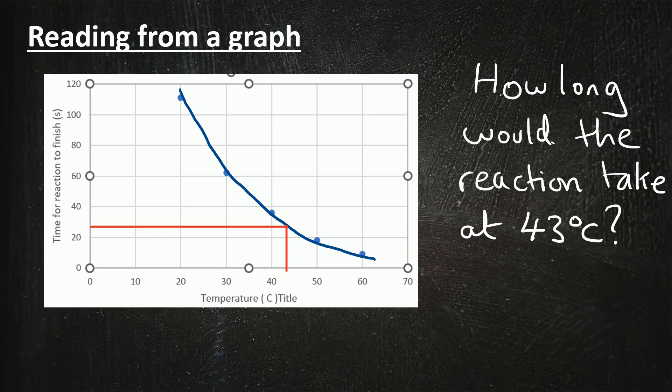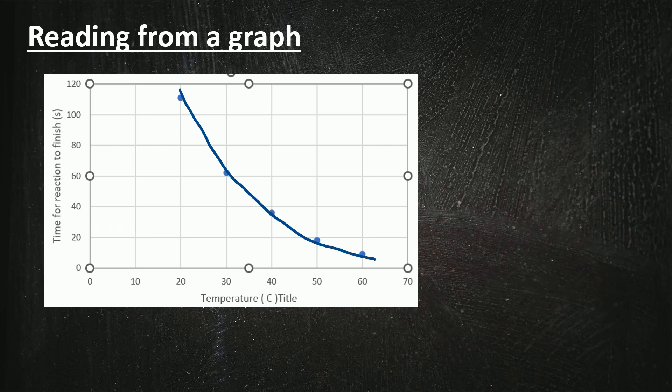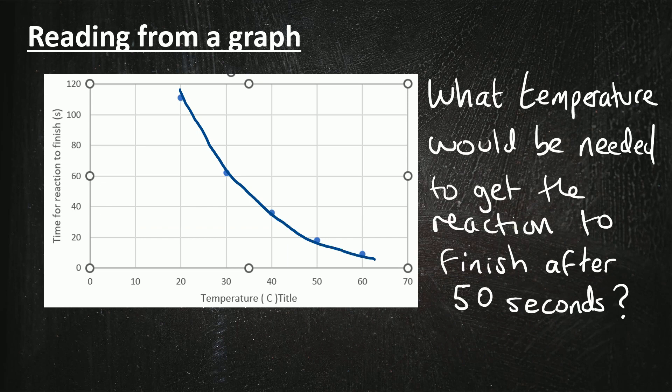Sometimes you're asked to read off a graph going in the opposite direction. So the question could be what temperature would be needed to get the reaction to finish after 50 seconds? So this time we're going to draw a line across from 50 seconds until it hits the graph, and then another line down, once again with the ruler, until it hits the x-axis. And this time that looks like 34 degrees C by reading off the x-axis.